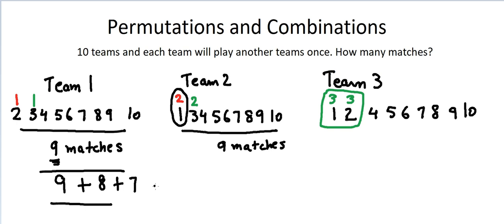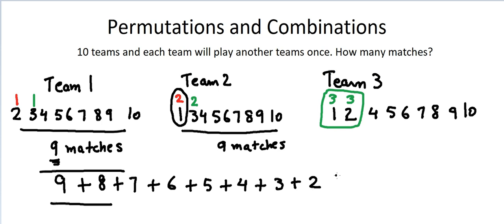If we do the same thing again and again, we get: nine plus eight plus seven plus six plus five plus four plus three plus two plus one. This covers teams one through nine; team ten contributes zero new matches. The sum of these numbers gives us the total number of matches that will be played.